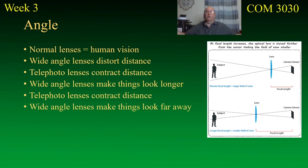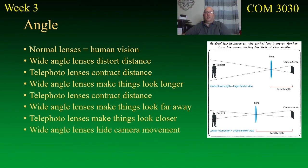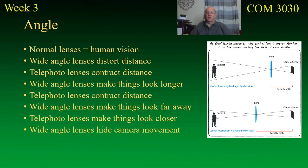Wide lenses make things look far away, but they're not really further away — they're just giving you the impression. A telephoto lens makes far-away things look closer; they're not really moving any closer, it's just ignoring everything in between. A wide angle lens will also hide camera movement — if you're going to move the camera and you've got a wide angle lens, you don't notice much of a problem.